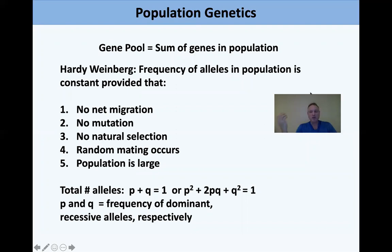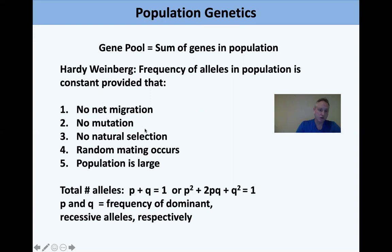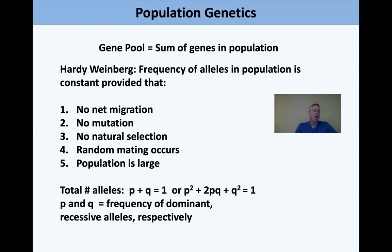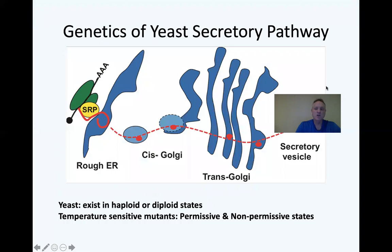Population genetics looks at genetics across a population — examining the gene pool, the sum of all genes. The Hardy-Weinberg equation makes simplifying assumptions: no net migration, no mutation, no natural selection, random mating, and a large population. The total allele frequency is P + Q = 1. Squaring each side gives P² + 2PQ + Q² = 1, where P and Q are the frequencies of dominant and recessive alleles respectively. You'll typically be given the fraction of people with a certain trait and asked to solve for P or Q.